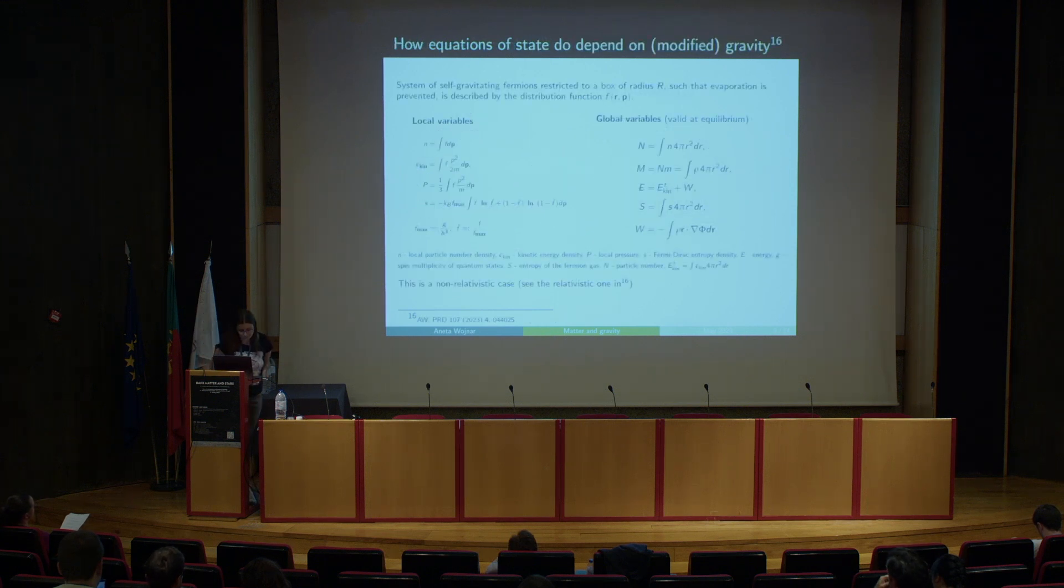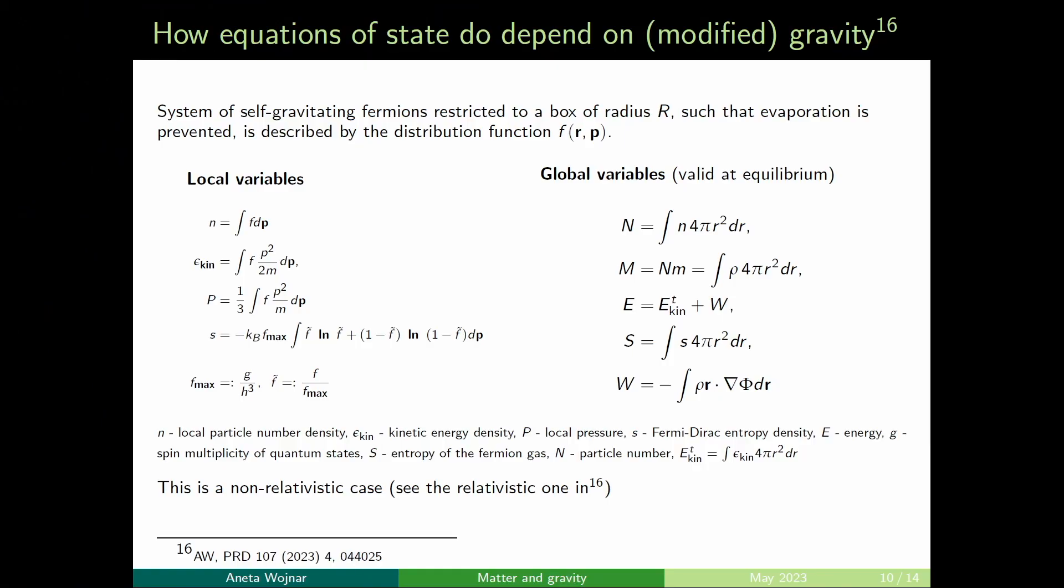And the last thing I just wanted to also discuss with you a bit is how the equation of state can depend on gravity or quantum gravity or modified gravity. So I am interested in the set of equations which can describe my star. Now, let's take like a very simple model. I want to have self-gravity kinetic fermions, spherical symmetric, and I will put it in a box in such a way, you know, not to have the evaporation. So this is a micro canonical system. You already see, I mean, you can write the local variables and global variables. The only assumption I have here because I am interested in fermions, so I need to take into account the Pauli exclusion principle.